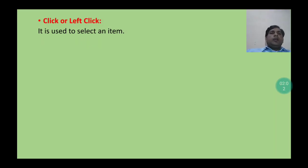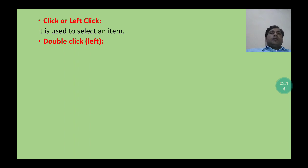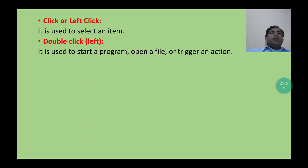Next we talk about double click. When we perform double click of the mouse, it is used to start a program, open a file, or trigger an action. To perform a double click, we just have to press the left click two times. Then we can start a program or open a file.